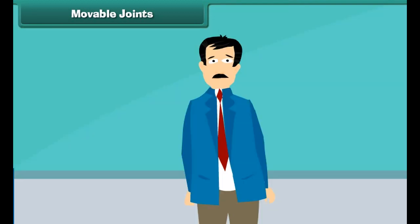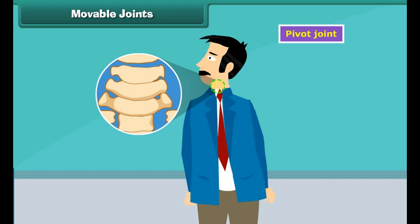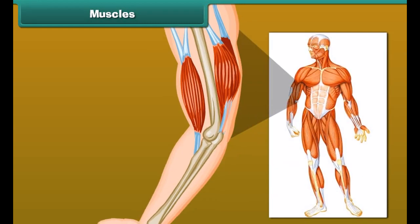Friends, have you ever noticed that we can move our hands and our feet in different ways? The joints which allow such movements are called gliding joints. Joints in the wrist and the ankle are the examples of these joints.